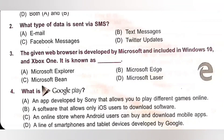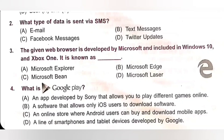Question 2: What type of data is sent via SMS? A. Email. B. Text messages. C. Facebook messages. D. Twitter updates. SMS stands for Short Message Service — it is a text messaging service component for mobile telephony systems. So option B is the correct answer.